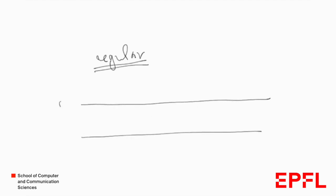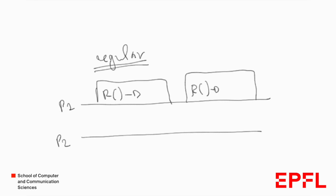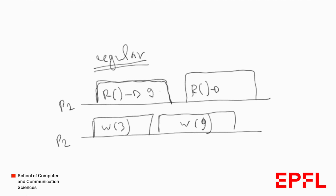For example, if process P1 performs two read operations while process P2 performs two write operations — first writing 3 then writing 9 — it could be the case that P1's first read returns 9 because it is concurrent with that write, and the second read returns 3 because it is concurrent with the write of 3. A regular register may return the previously written value when a read is concurrent with a write.